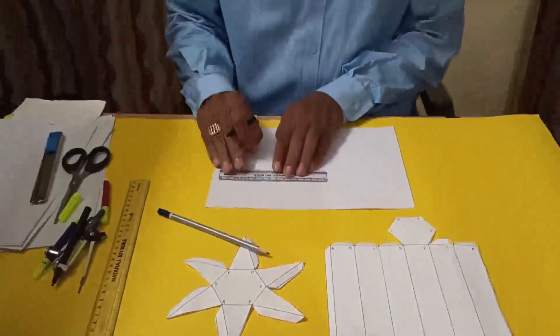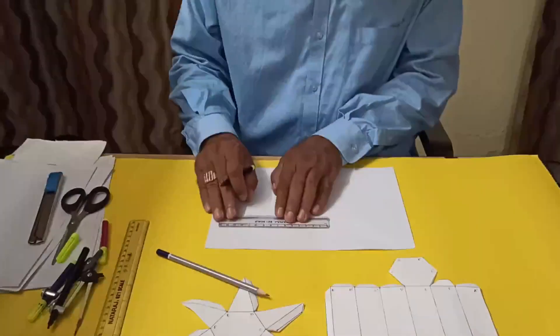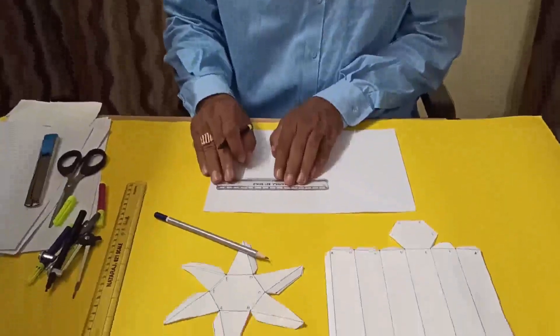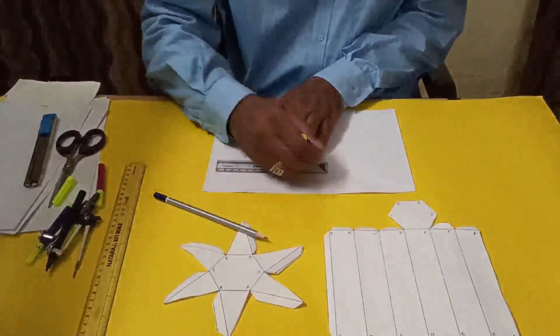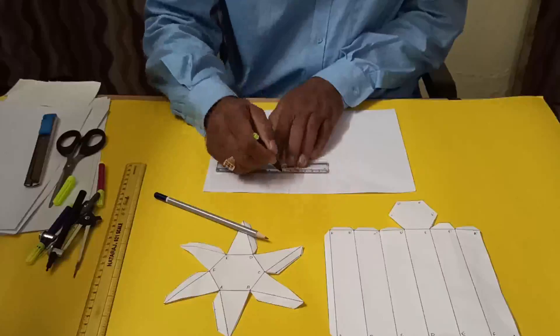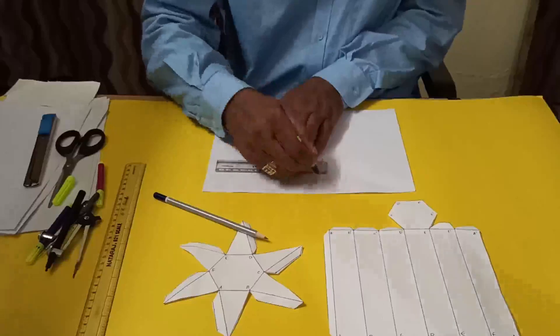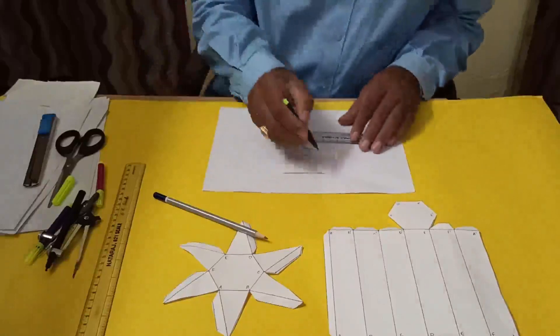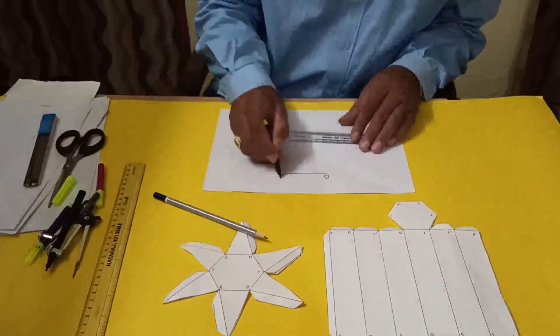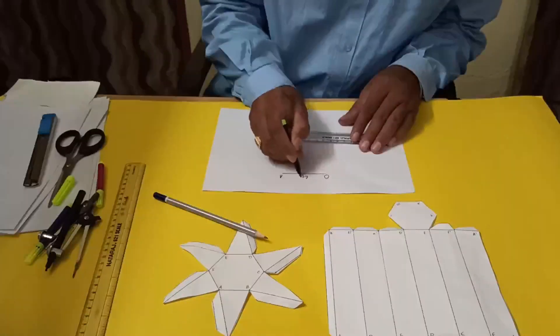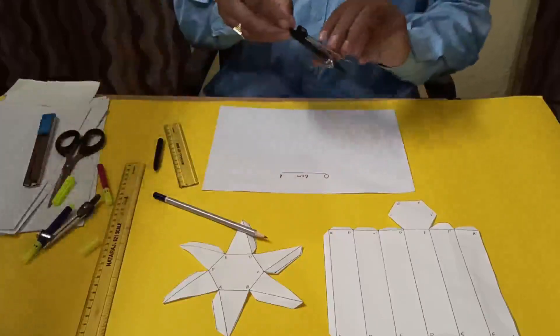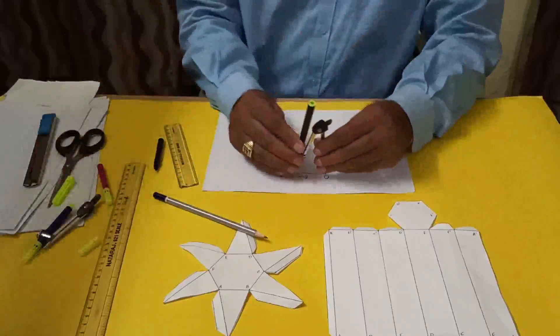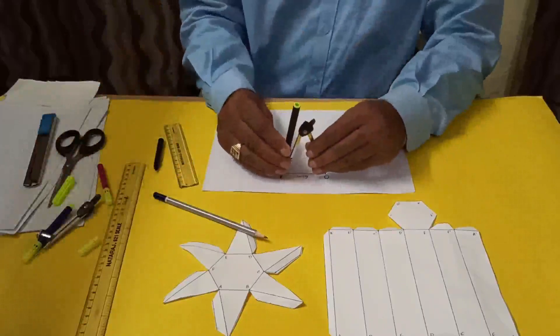So O and A is 6 centimeters. Now draw a semicircle, or you can draw more than a semicircle.